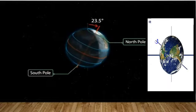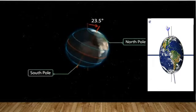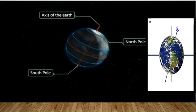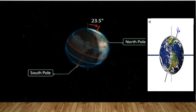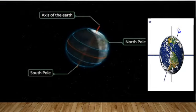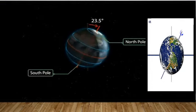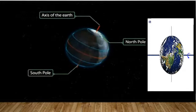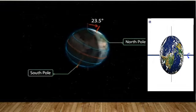The axis of the Earth which passes through the poles is inclined at an angle 23.5 degrees from the vertical. This tilt of the Earth's axis is known as inclination of Earth's axis.